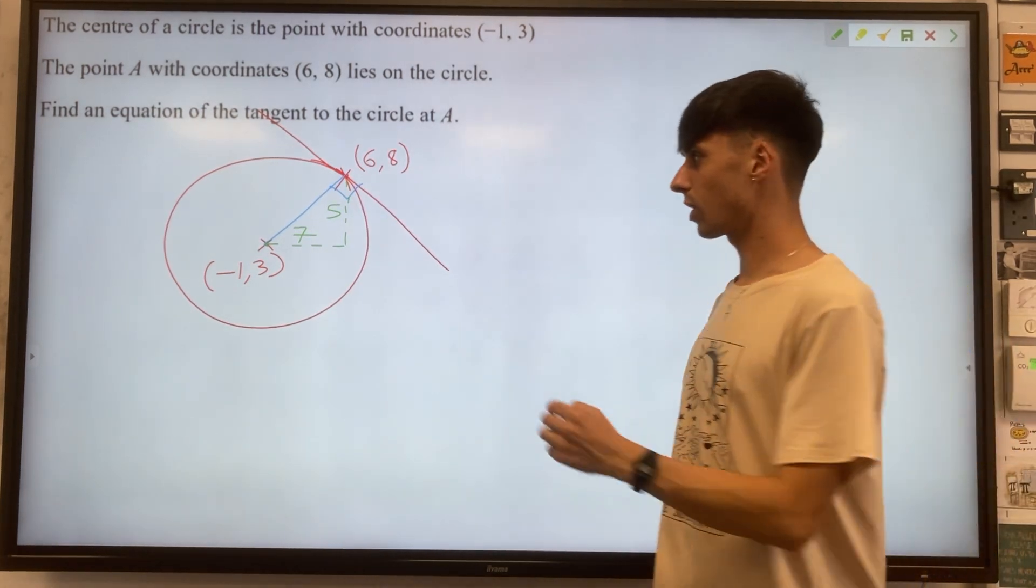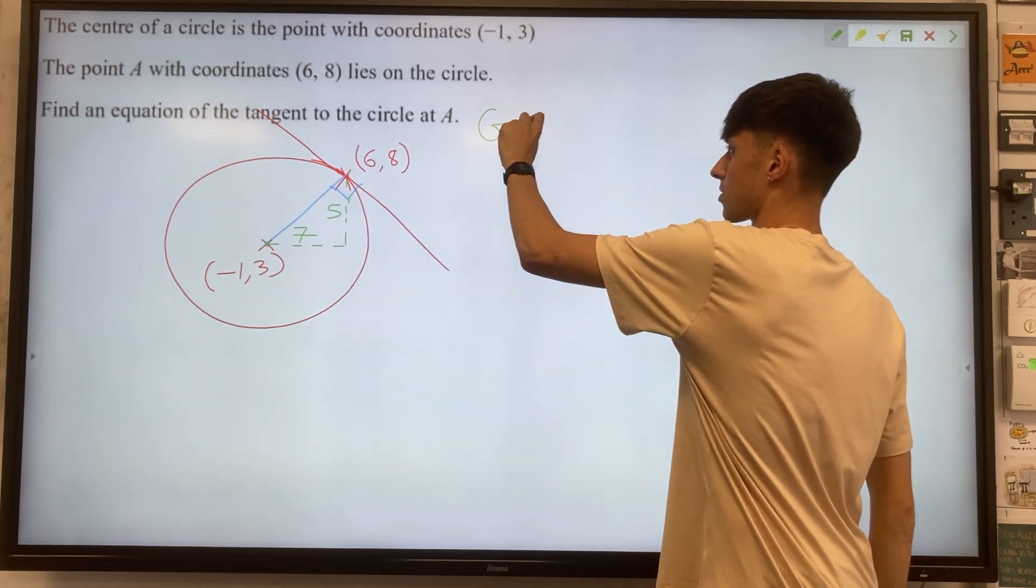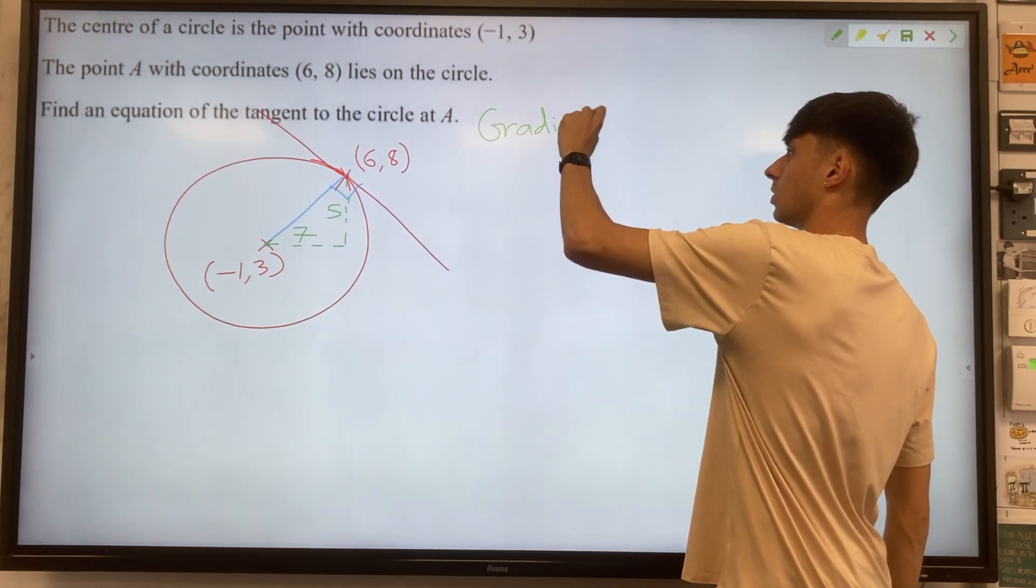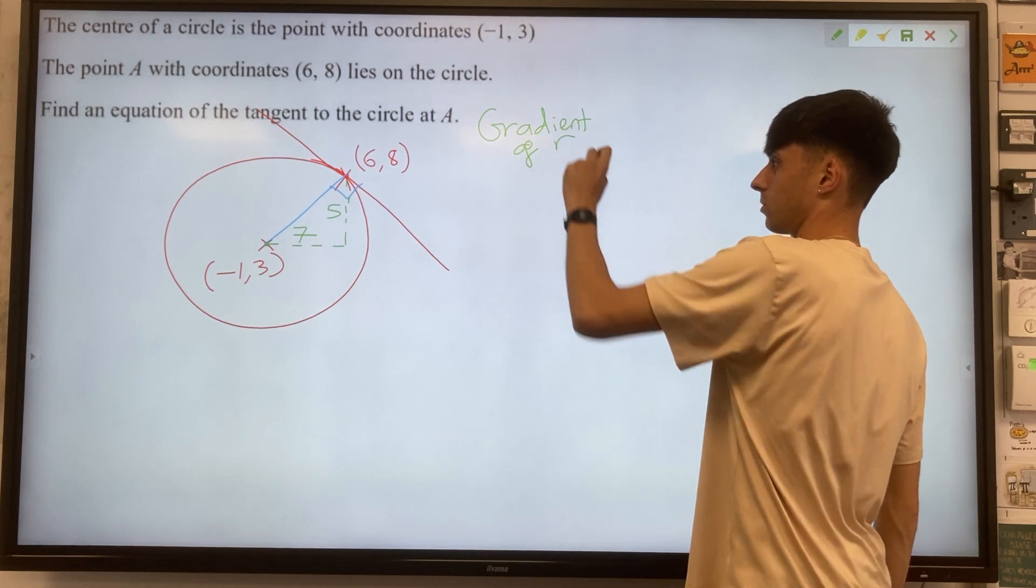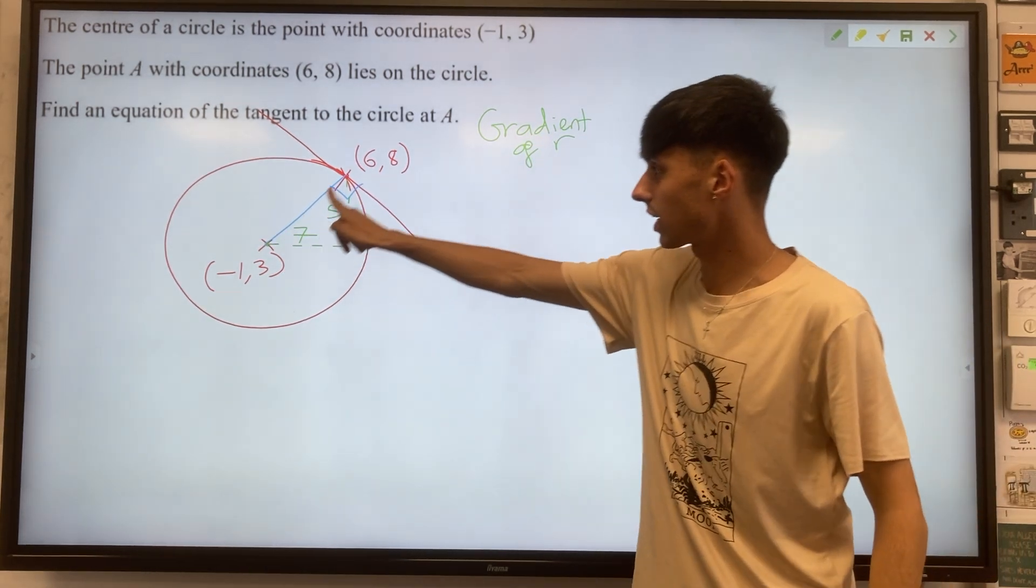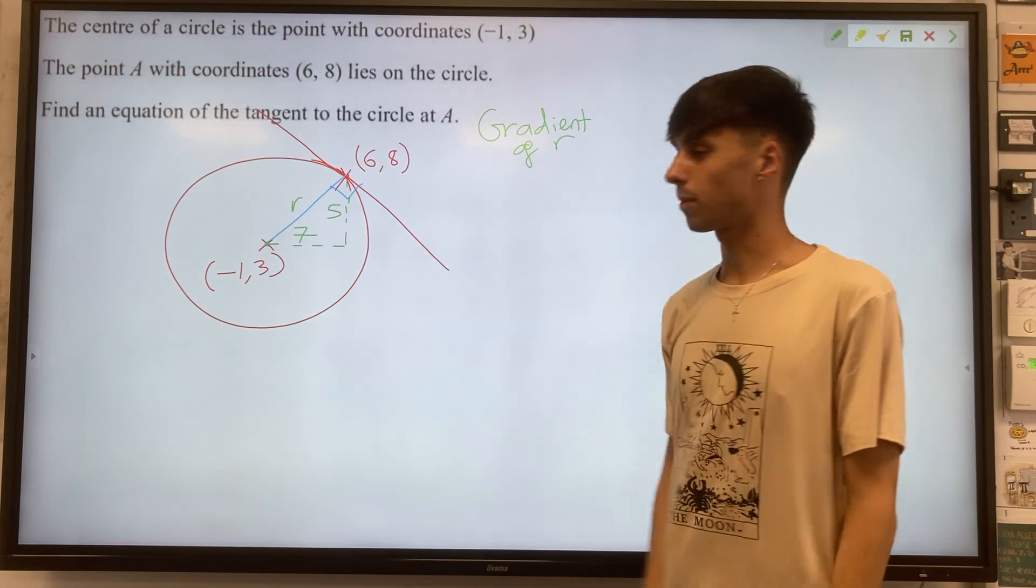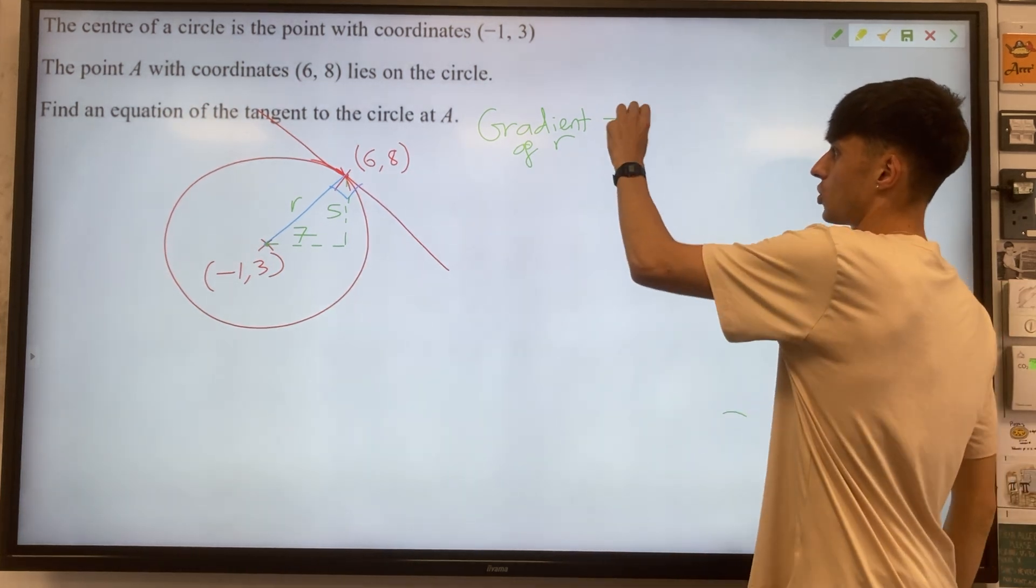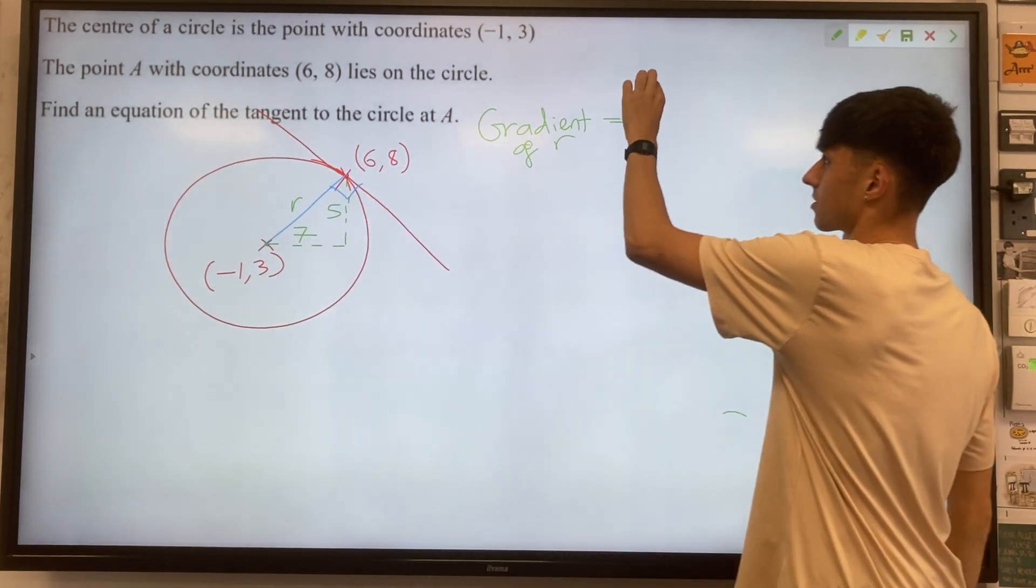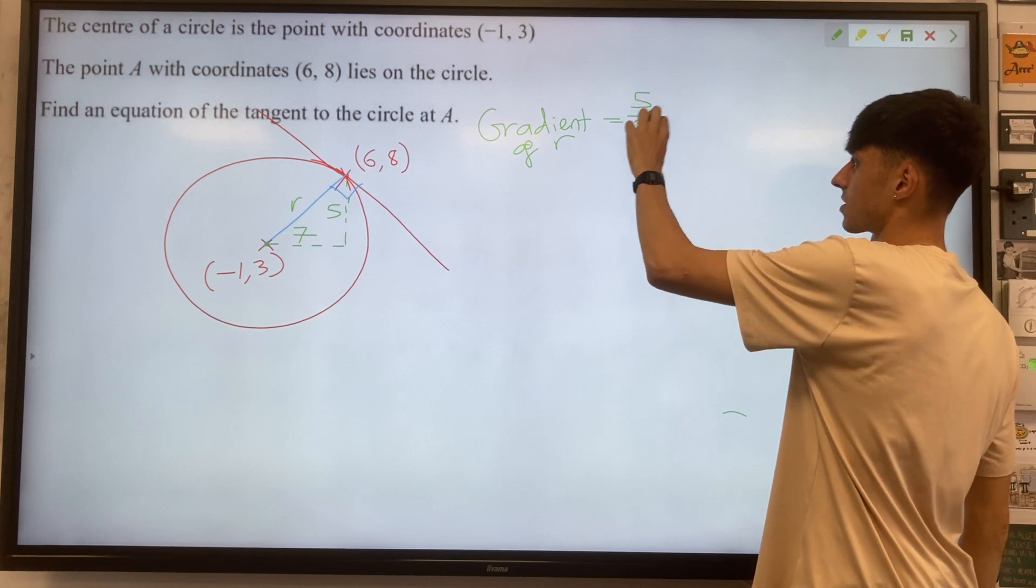So I'm going to write down here then the gradient of r, our radius that we were investigating. That's this part here. So that gradient change in y over change in x is going to be 5 over 7. That's not really a very nice number for us.